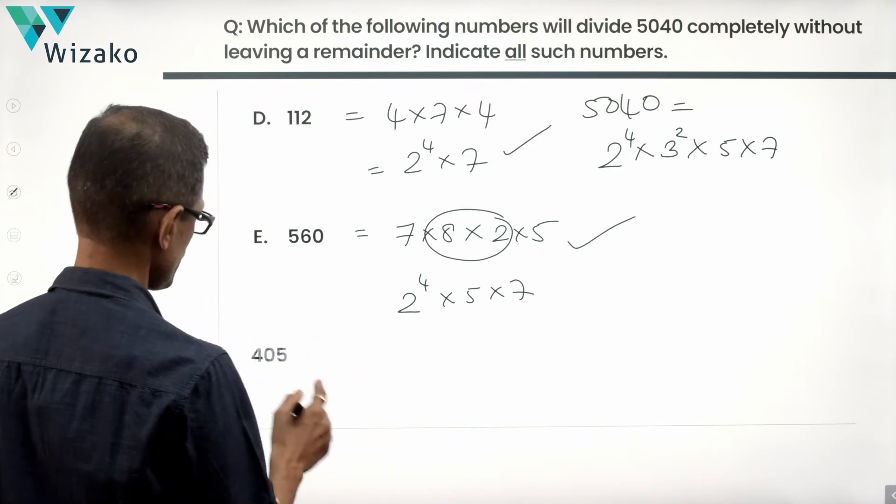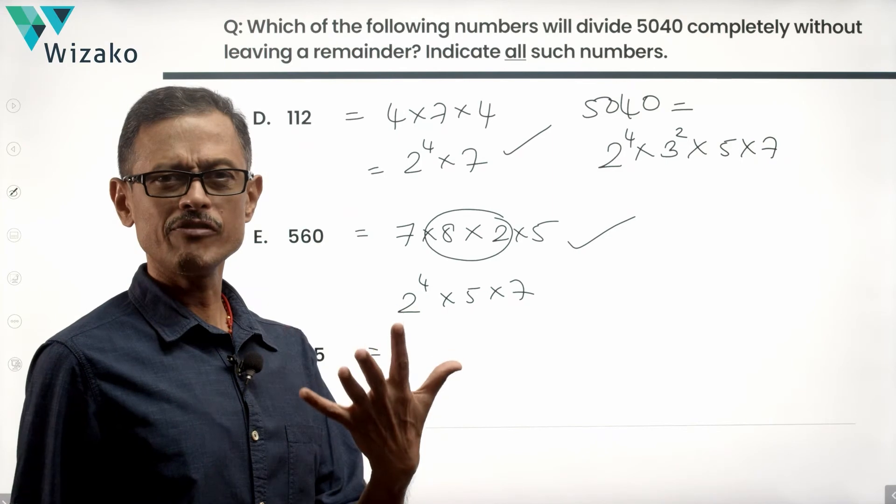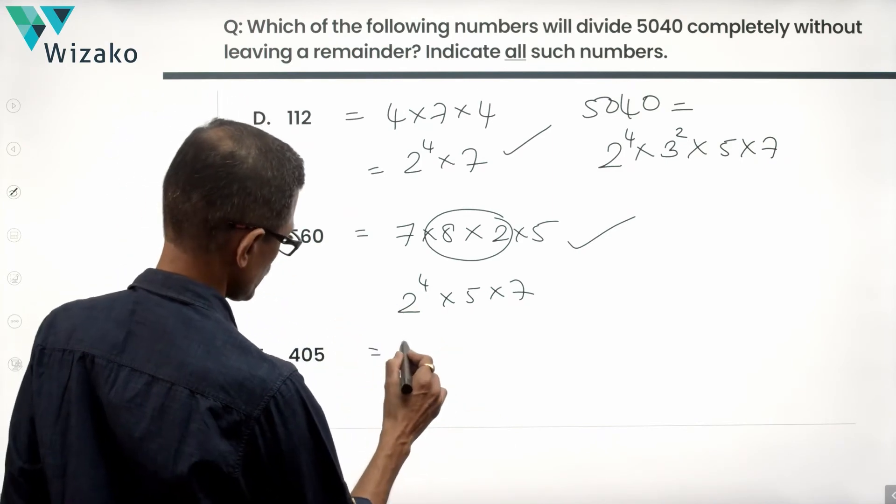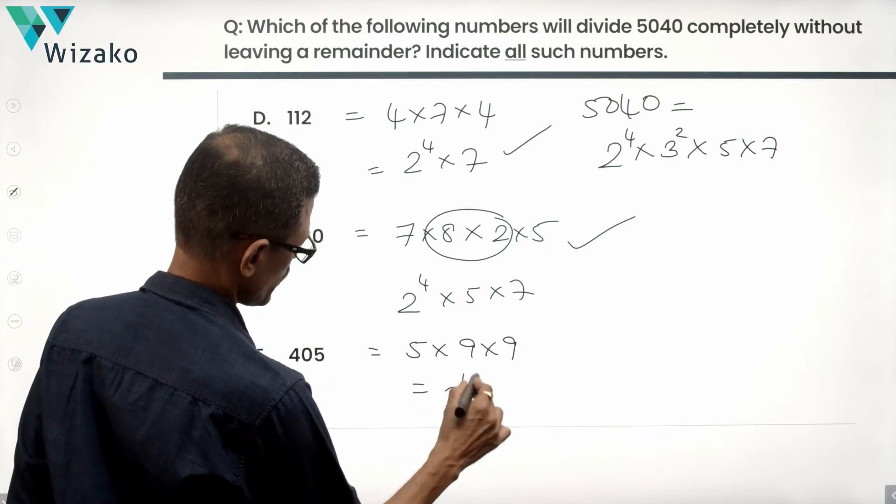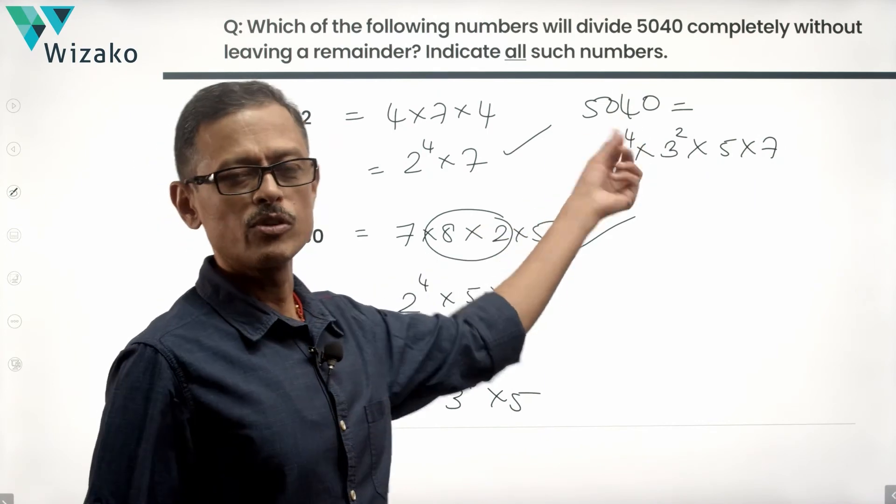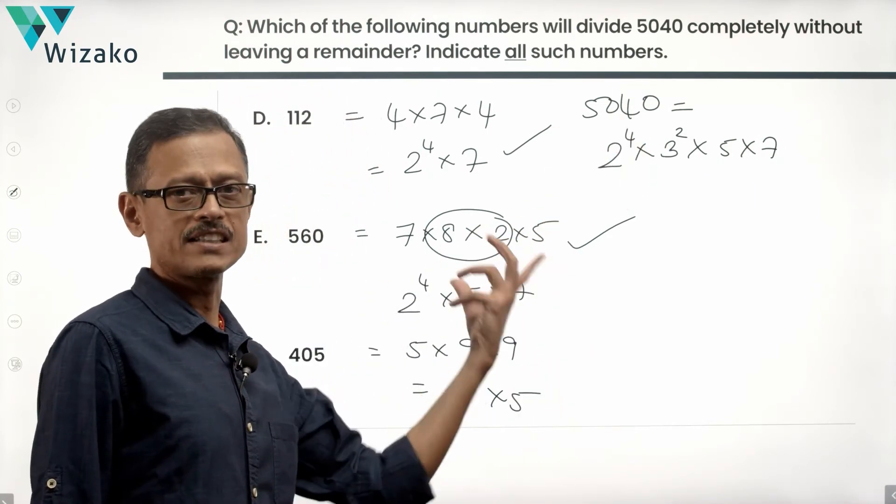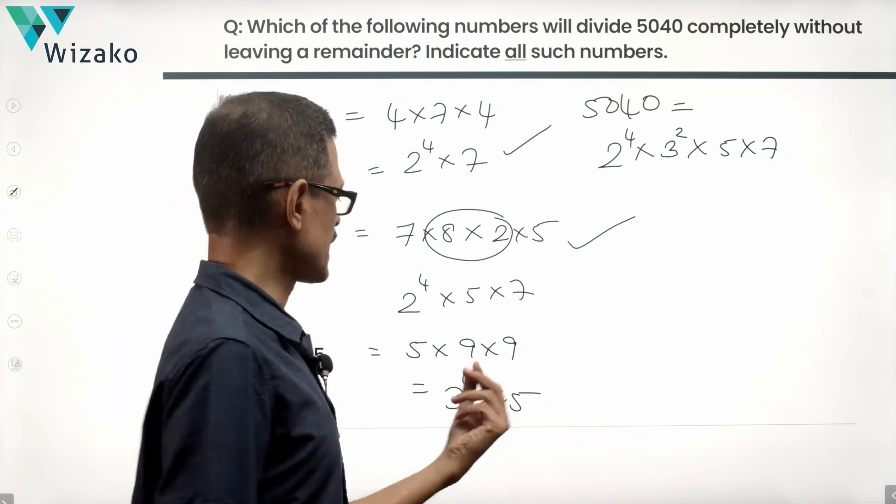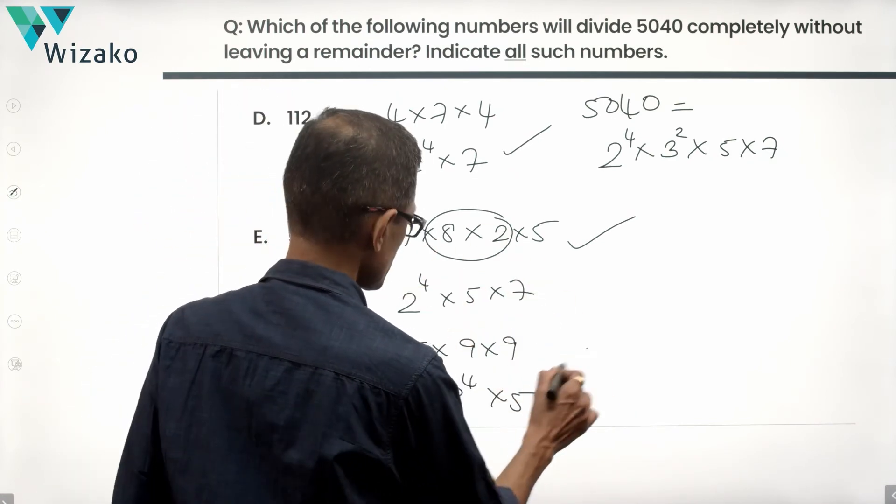Lastly, we have answer option F. 405. 405 is 45 times 9, which is 5 into 9 into 9, which is 3 raised to the power of 4. 3 square, 3 square times 5 is what we have. 5040 contains only a 3 square, whereas for 405 to be able to divide that number, 5040 should have contained a 3 power 4. It does not have adequate powers of 3. So F is not the answer.